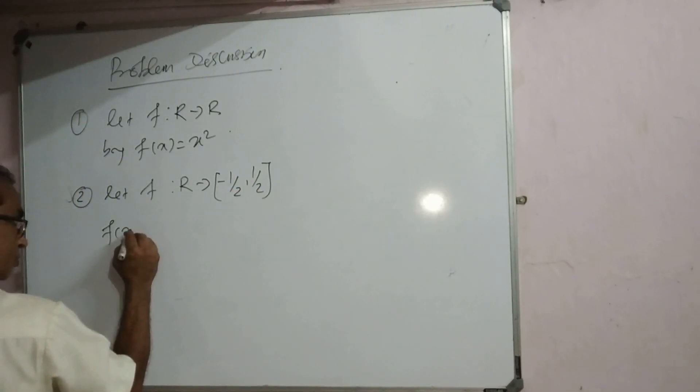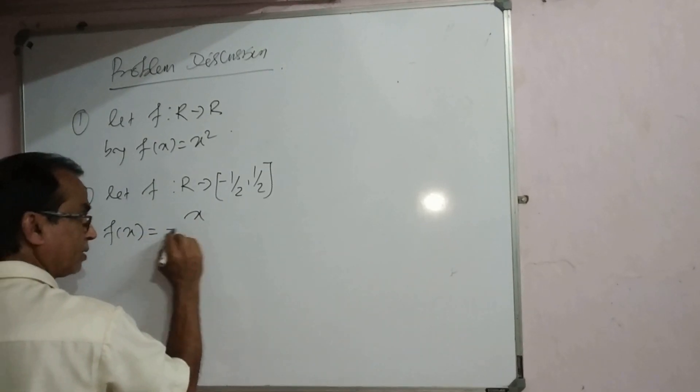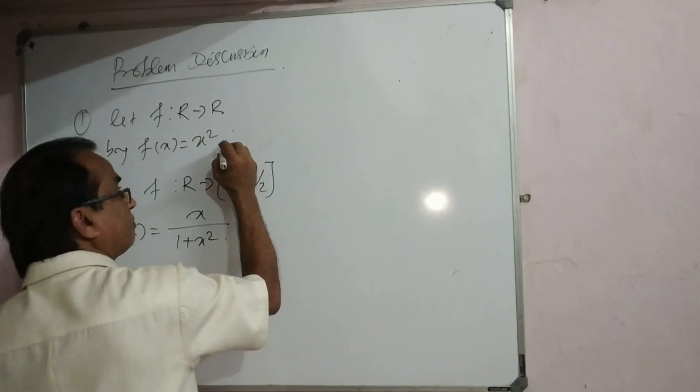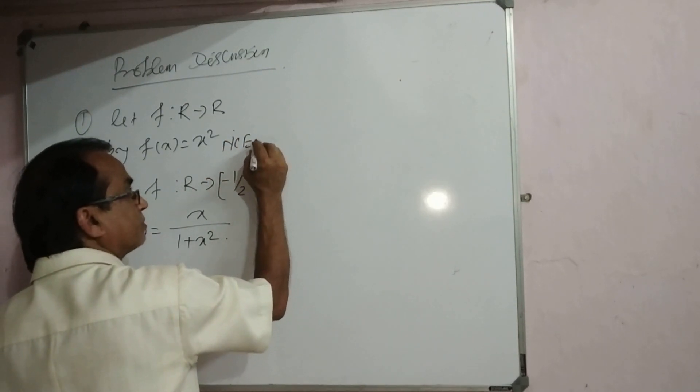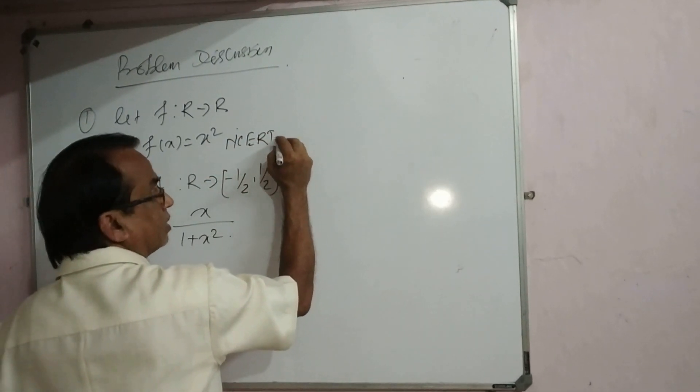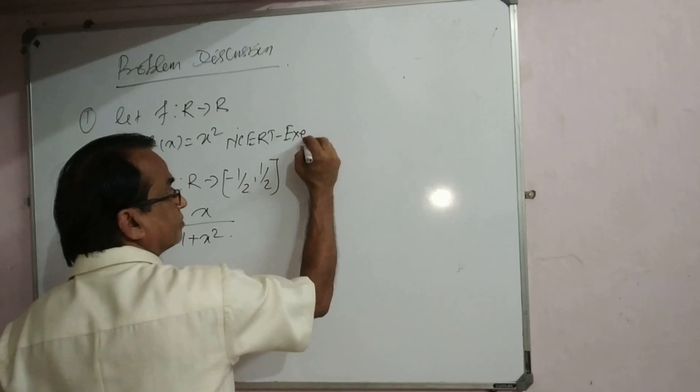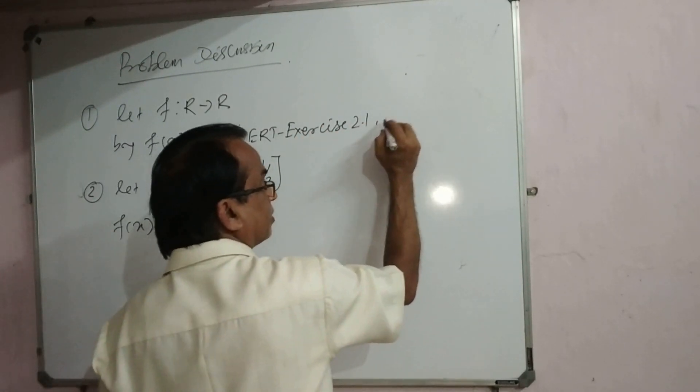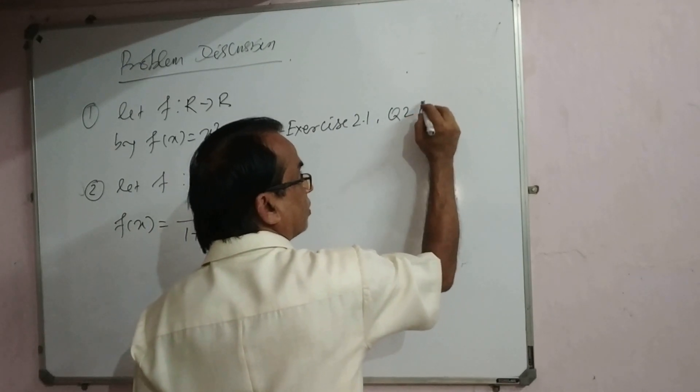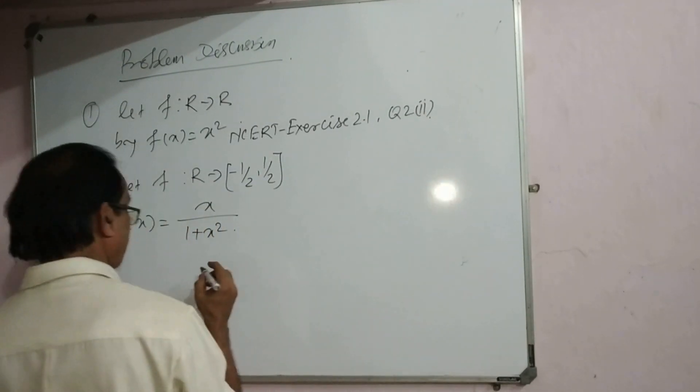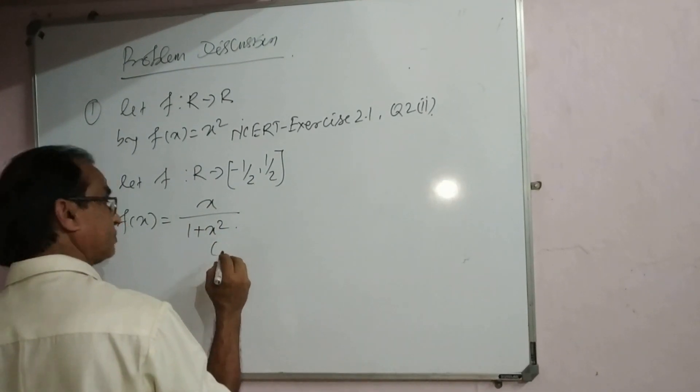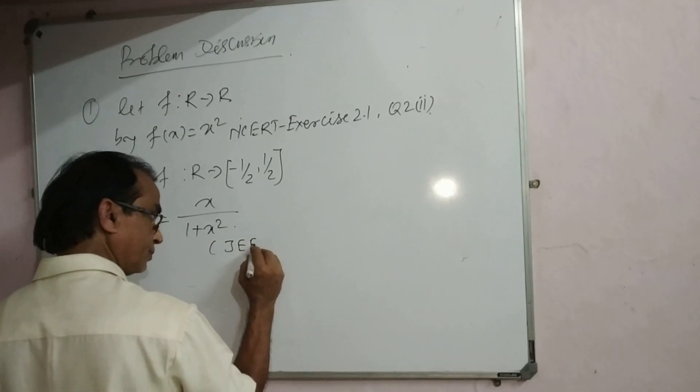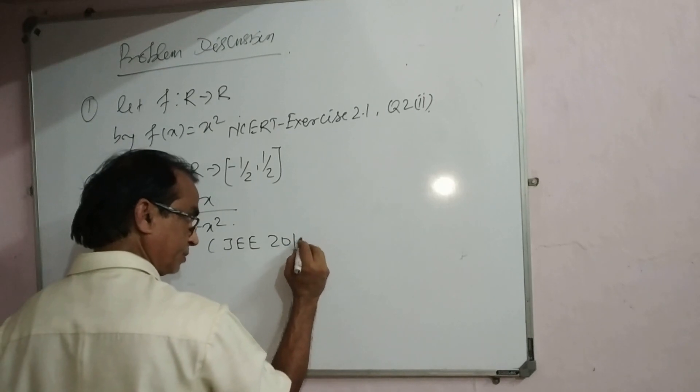Let f map R to R, f(x) equals x divided by 1 plus x squared. This problem is from NCERT exercise 1.2, question number 2, second part. This problem is from JEE 2018 online.